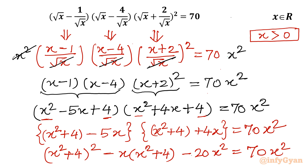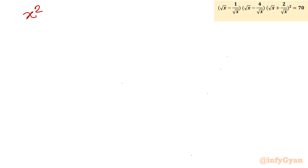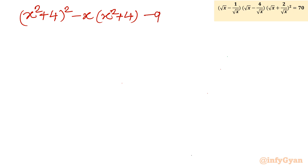This is a quadratic equation in (x² + 4). Taking all terms to the left-hand side: (x² + 4)² minus x(x² + 4) minus 20x² minus 70x² equals 0, which simplifies to (x² + 4)² minus x(x² + 4) minus 90x² = 0.